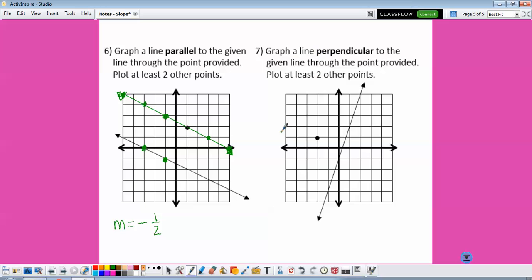In number 7, we want to graph a line perpendicular to the given line. So again, we're going to find our slope. So up 3 over 1. The perpendicular slope, we flip our fraction over. And since this one was positive, the perpendicular has to be negative.